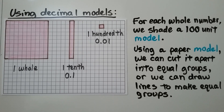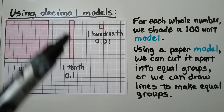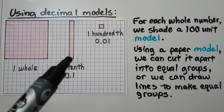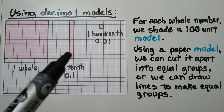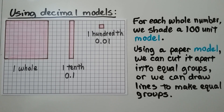To use decimal models, for each whole number we shade 100 unit squares. A tenth would be 10 units, or one column of 10. And a hundredth would be one little square. Using a paper model, we can cut it apart into equal groups, or we could draw lines to make equal groups to separate them.